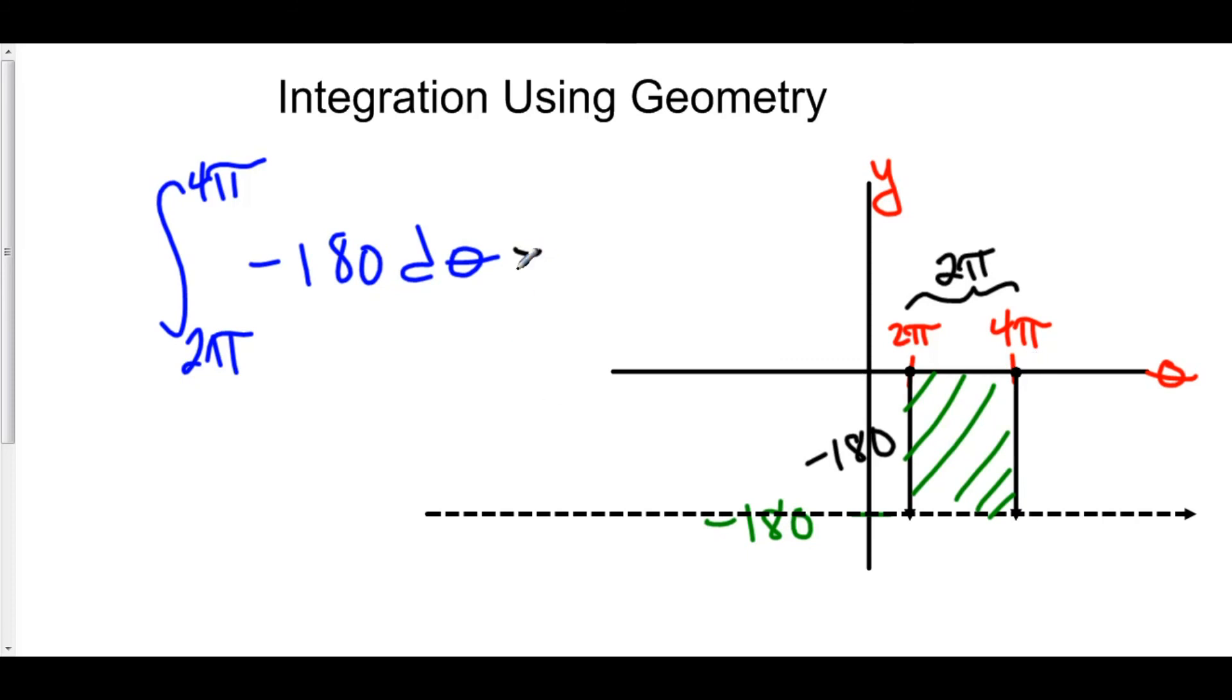So, the area here is 2π times negative 180 is negative 360π. And that is the integral.